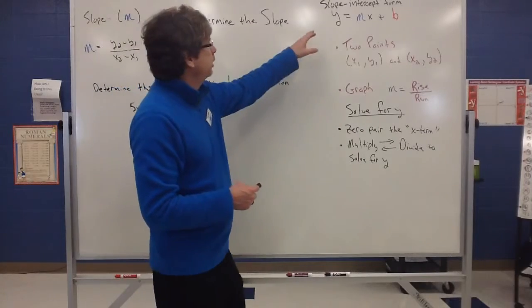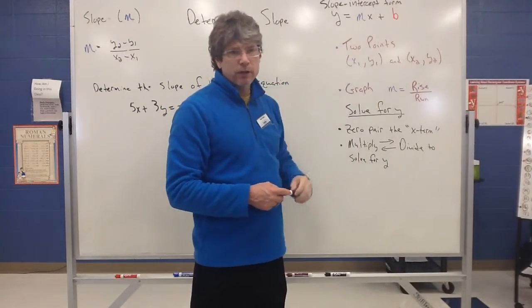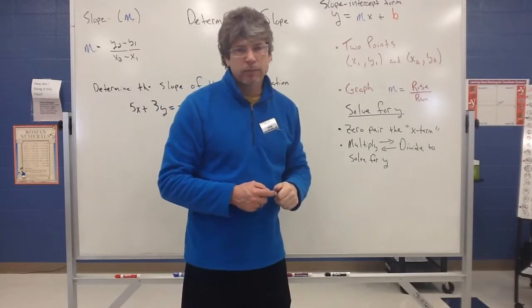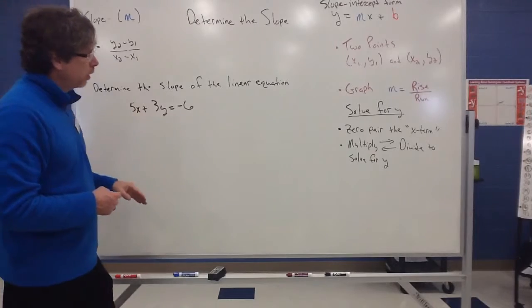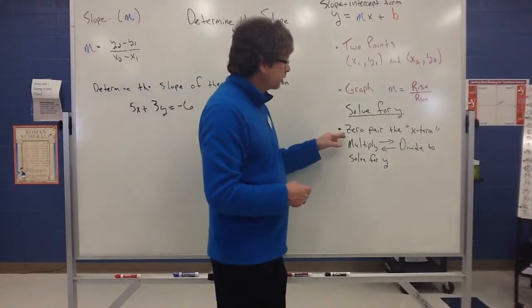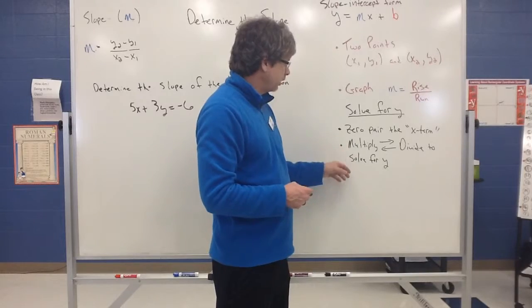One strategy is if I can solve that equation for y, that coefficient of x is going to be our slope. And we've solved for y before. To solve for y, we just got a zero pair of that x term and multiply or divide to solve for y.